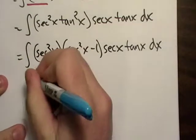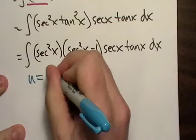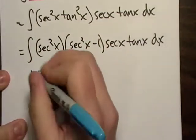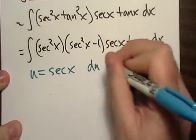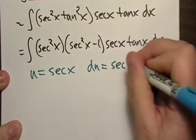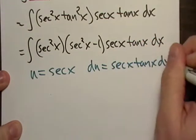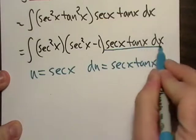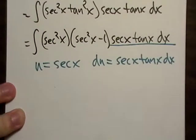So I'm going to go ahead and do u equals secant. So du will equal secant tangent and it's sitting right there in front of our noses, isn't it?